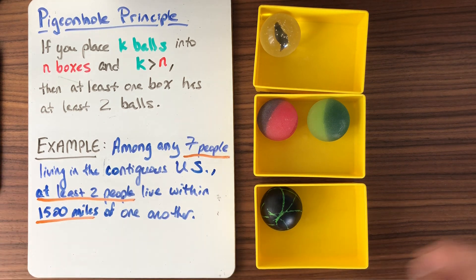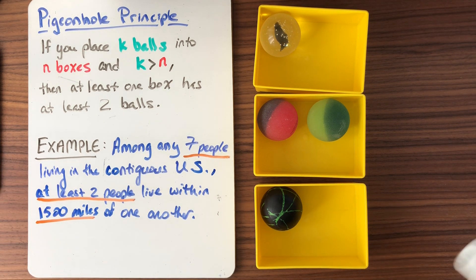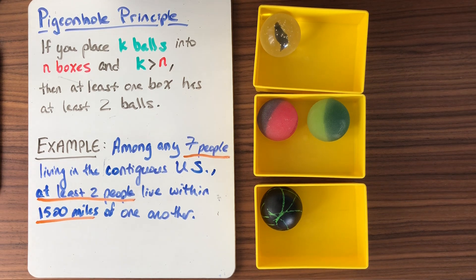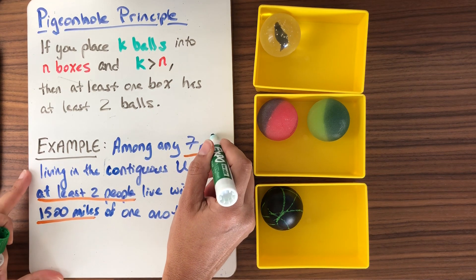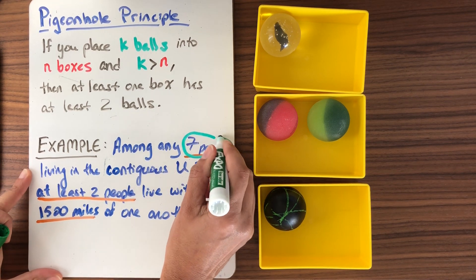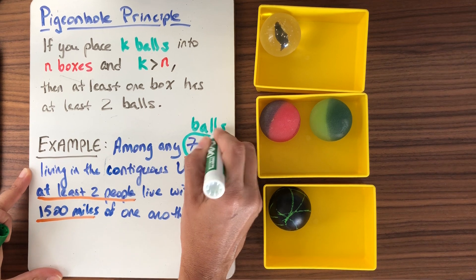So as we look at this problem, what we want to do is say, what are my balls and what are my boxes? And that's going to help us to prove this with the pigeonhole principle. So I've got seven people. These are the balls that I have. I've got seven balls.